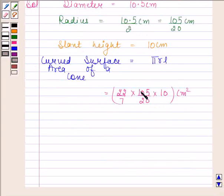On cancelling 105 by 7, we get 15. On cancelling 10 by 20, we get 1 by 2. And on cancelling 22 by 2, we get 11. Now, 11 into 15 is 165.